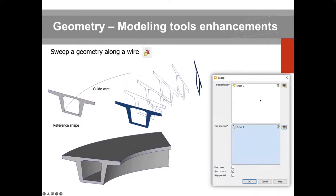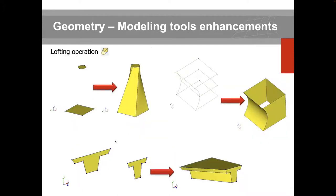You select the shape you want to sweep (your reference shape) and a tool (your guide wire or curve), and Diana will automatically sweep it to build a 3D model. This can be a very powerful tool when dealing with advanced 3D geometry. Another operation is lofting, which lets you generate complex geometry with minimal information — for example, generating a transition shape from a square to a circular cross-section.